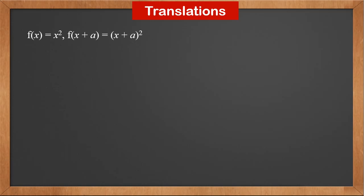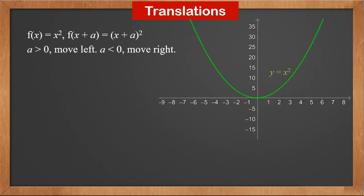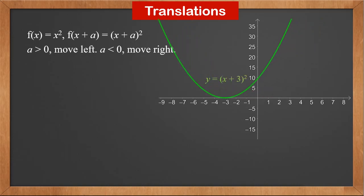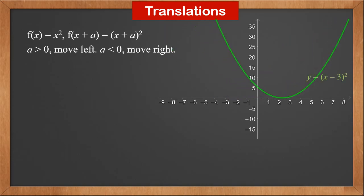From the section on quadratic graphs, we know the graph of (x+a)² is the graph of x² moved along the x-axis by a. If a is positive, it moves left; if a is negative, it moves right. Here's the graph of y = x². It moves left by 3 units and becomes y = (x+3)². If it moves right by 3 units, it becomes y = (x−3)².